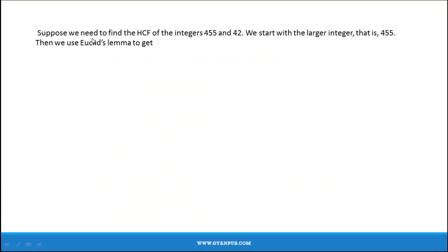Now we shall understand this with an example. Suppose we need to find the HCF of the integers 455 and 42 using Euclid's division lemma. We start with the larger integer, that is 455. So let us divide 455 by 42. Therefore, 42 times 10 gives 420, and the remainder is 35. Therefore, 455 can be written as 42 times 10 plus 35.